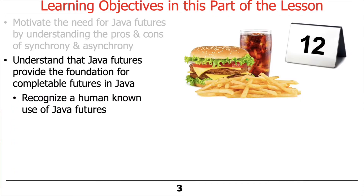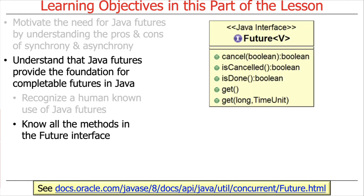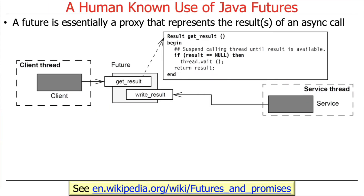We'll also have a somewhat whimsical example of a human-known use of Java Futures, which I always find to be pretty easy to remember and very intuitive for those of you who have ever eaten at fast food restaurants. And then we'll also talk briefly about the methods provided in the Java Future interface, which again provides the foundation for completable futures. So we're going to talk first about a human-known use of futures — obviously not Java Futures, but futures in general.